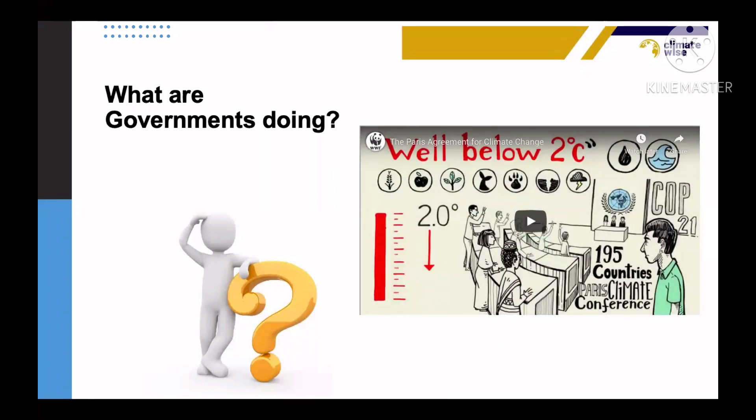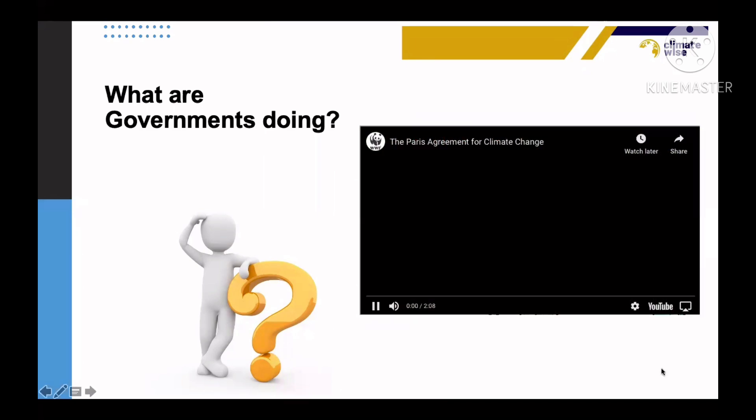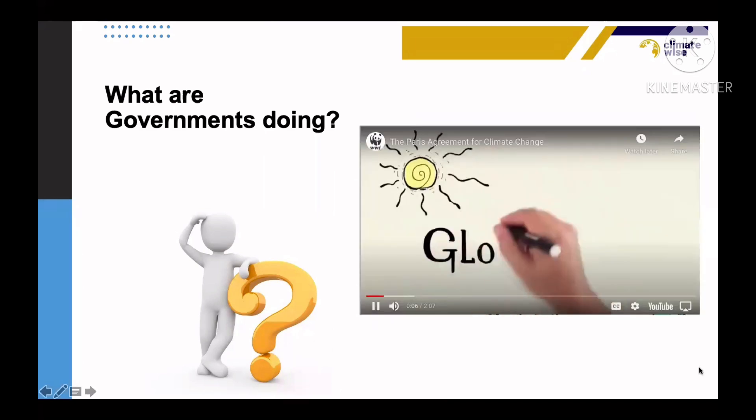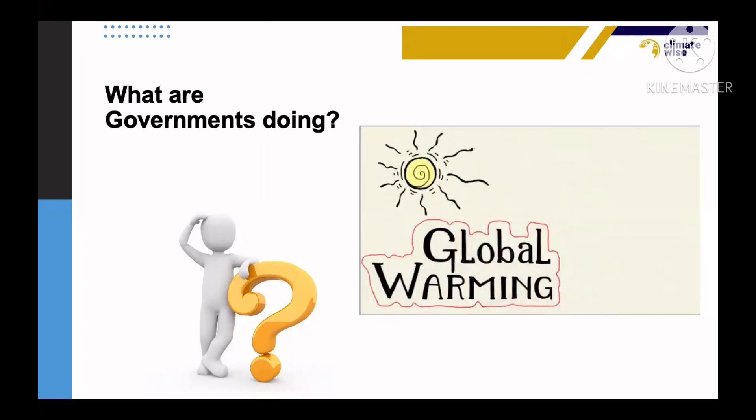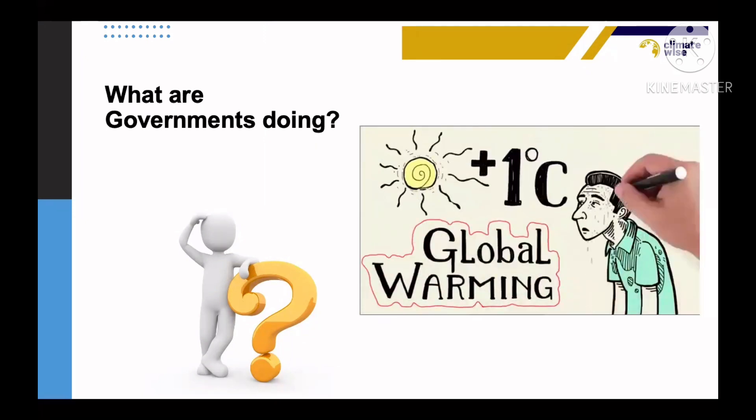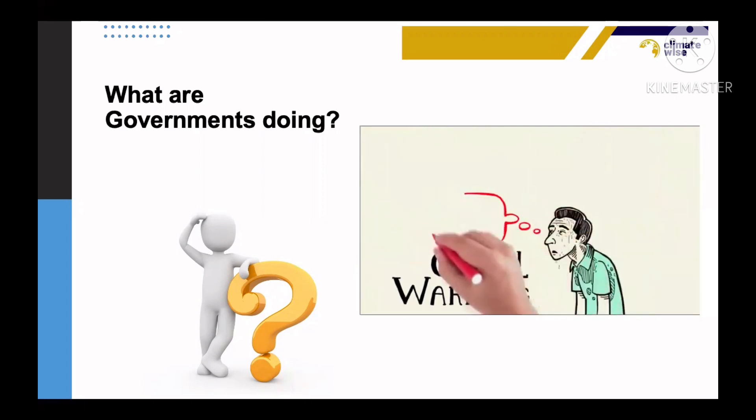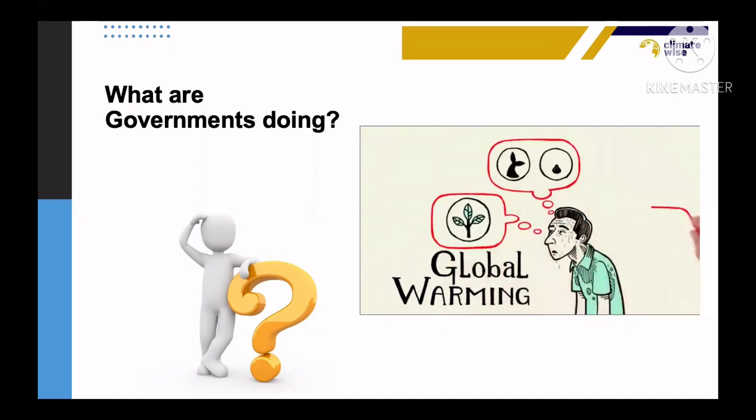We hear about this all the time. But what are our governments doing? We found out this. The world is facing a climate emergency. The earth's temperature has already increased by one degree Celsius above pre-industrial levels, and this is causing severe impacts on water supplies, biodiversity, oceans, food production, and extreme climatic events.